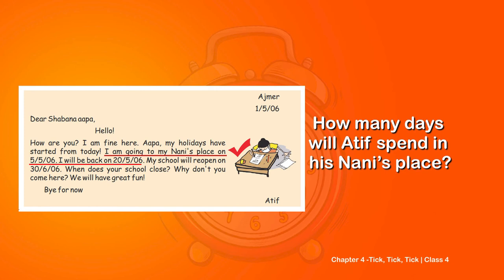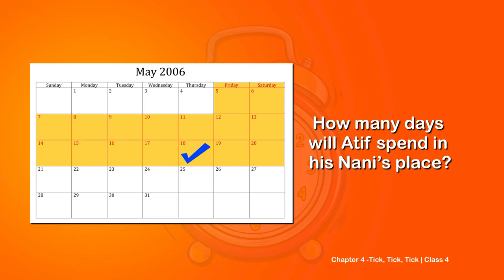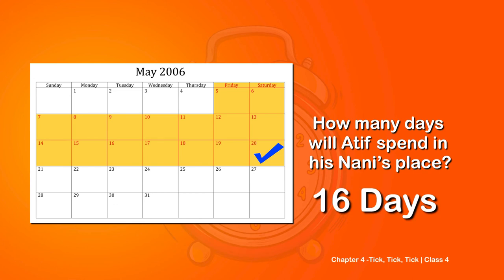So how many days are there from 5-5-2006 to 20-5-2006? Here is a calendar. Start counting: 1, 2, 3, 4... keep counting till you reach 20th May 2006. How many days did you get? Yes, 16 days. So Atif will spend 16 days in his nanny's place.